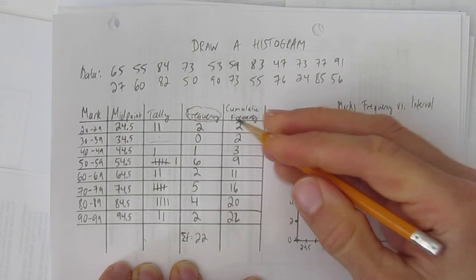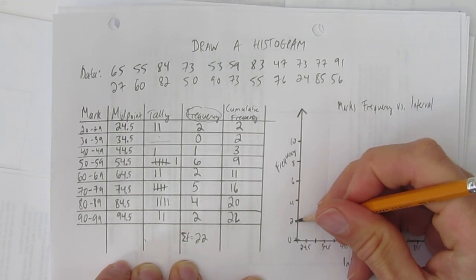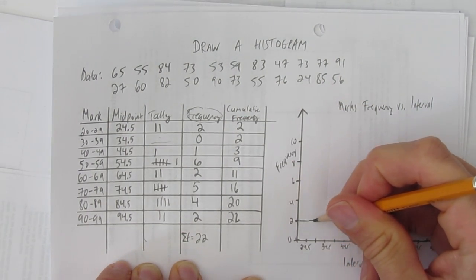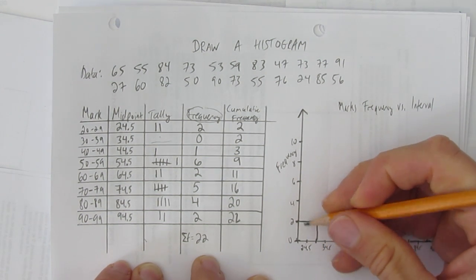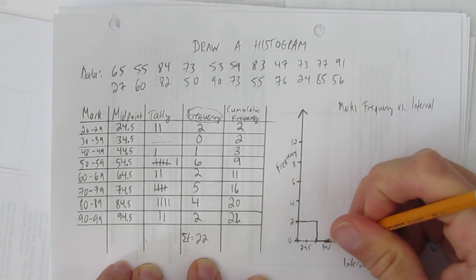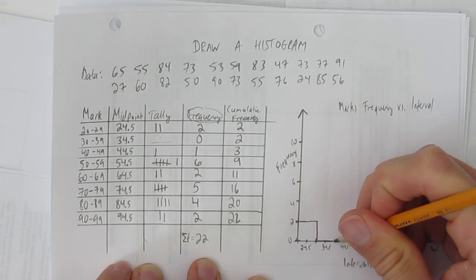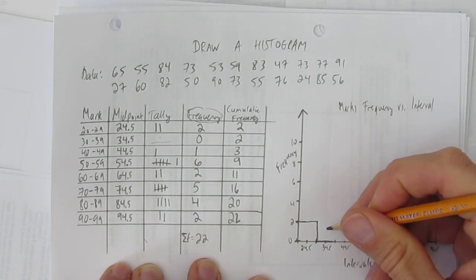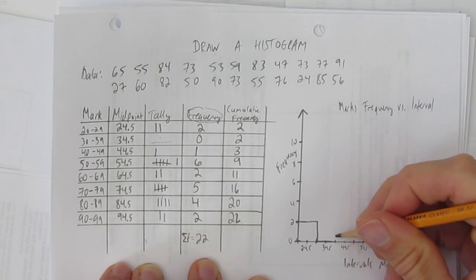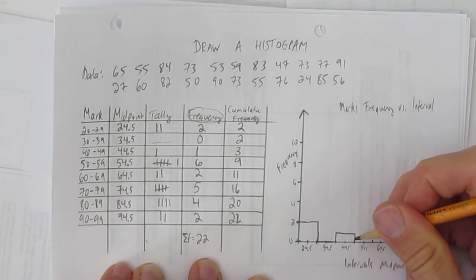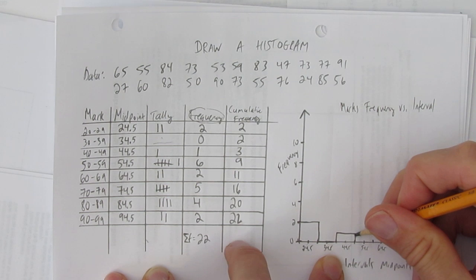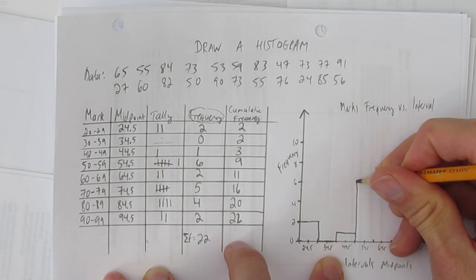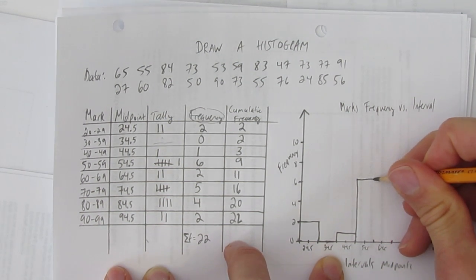And now, identify the frequency and make the column. So, here I have 2 for 24.5. And then 0. Just show me somehow, maybe darken it, that you know that one's 0. And then make sure using this column, I have 1 here at 44.5. And then 6. That's all the way up here. And your bars should be touching. Very important for a histogram that the bars touch.